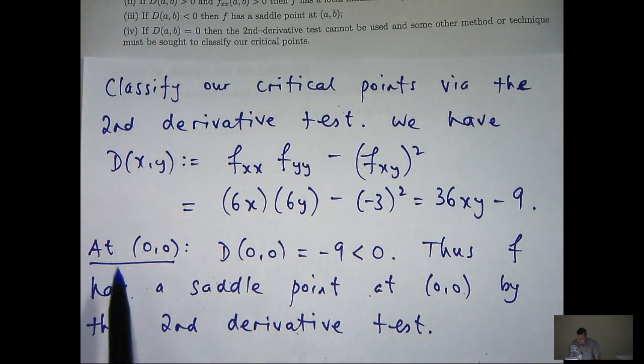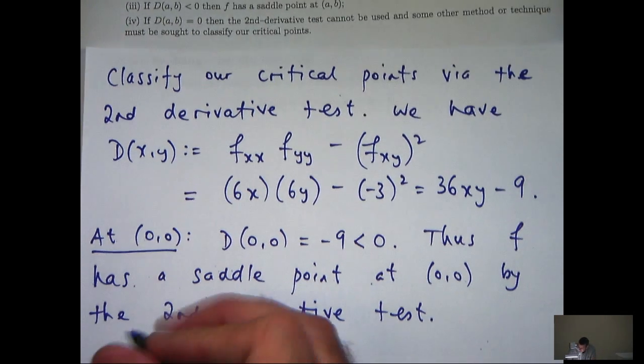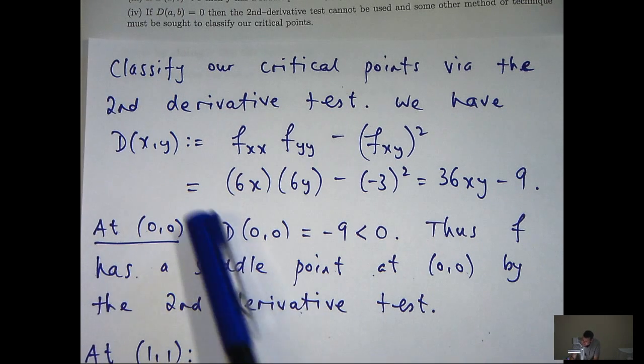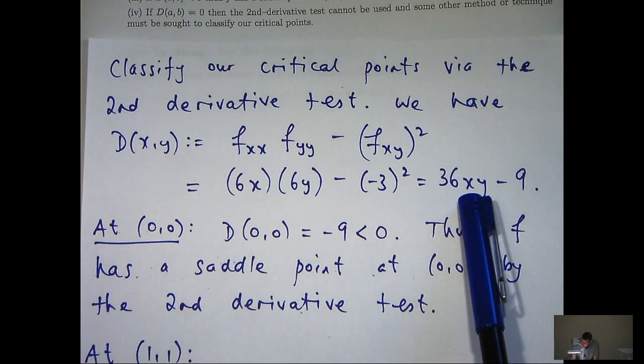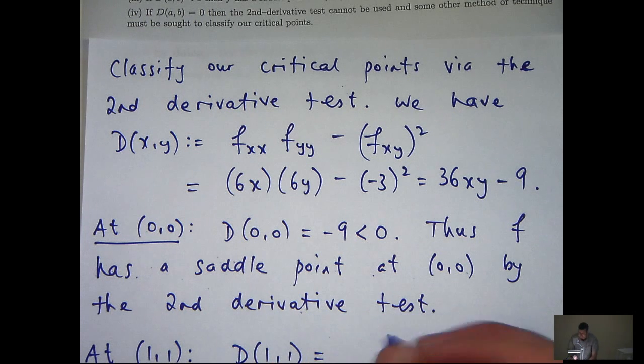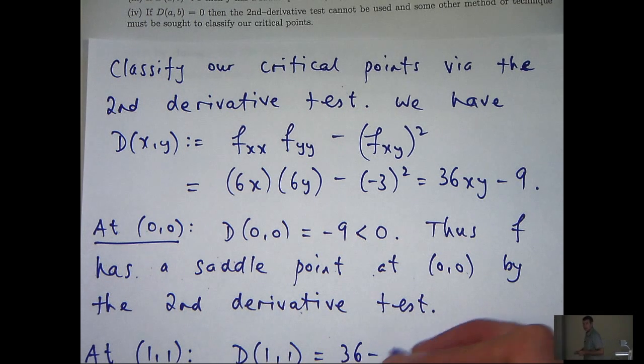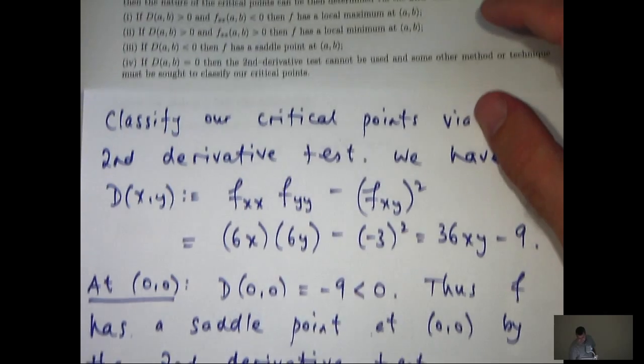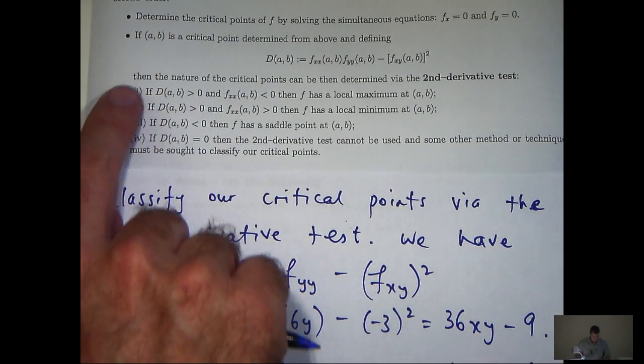What about the other critical point? Let's classify that. We go up to d, sub in x equals 1, y equals 1. We're going to get 36 minus 9, which is going to be positive.